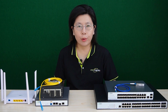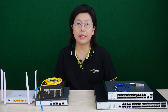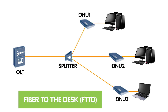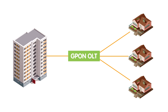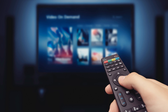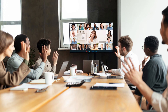Passive optical networks find diverse applications across various domains, showcasing their versatility and efficiency. In office environments, the fiber-to-the-desk FTTD application allows PON to deliver high-speed fiber connectivity directly to individual workstations, enhancing overall network performance. PON is also extensively employed in residential broadband access, commonly known as fiber-to-the-home FTTH, ensuring households have access to high-speed internet for bandwidth-intensive activities such as streaming, online gaming, and video conferencing.